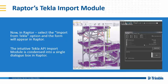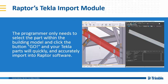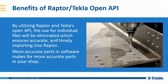There aren't many configurations or settings that you have to set. As with DSTV files, you kind of need to guide things to make sure they come in correctly. With Tekla and Raptor's open API, all the information is transferred in the background, which makes for a very seamless process for the user. The programmer only needs to select Go, and the parts will come in from Tekla accurately. Raptor is going to pull those parts in as accurately as you see them in Tekla. Here, we've got a beam in Tekla and a beam in Raptor — the hole locations have been brought in using the open API. Those plates connected to that beam can be brought in as scribes. They're one-to-one. By utilizing Raptor and Tekla's open API, the use for individual files is eliminated, which ensures accurate and timely importing. More accurate parts in software makes for more accurate parts in your shop.